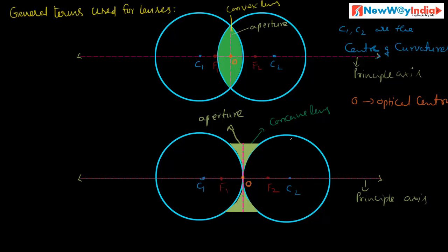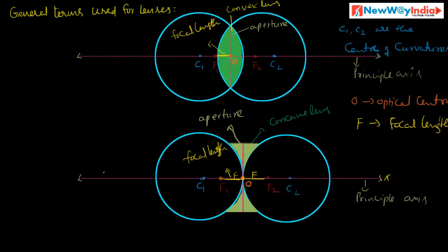The next term is focal length. The distance between the optical center and the principal focus is called the focal length. F is the focal length. XY is the principal axis, and F1 and F2 are the principal foci for convex and concave lenses respectively.